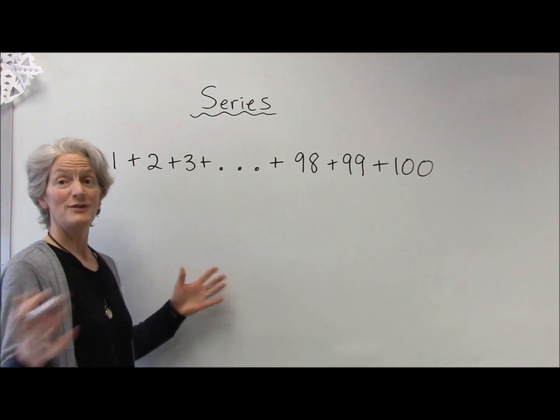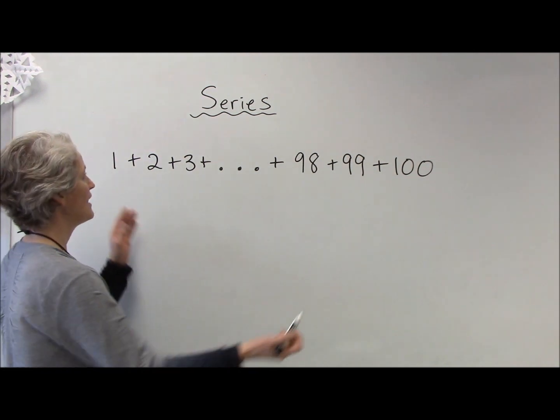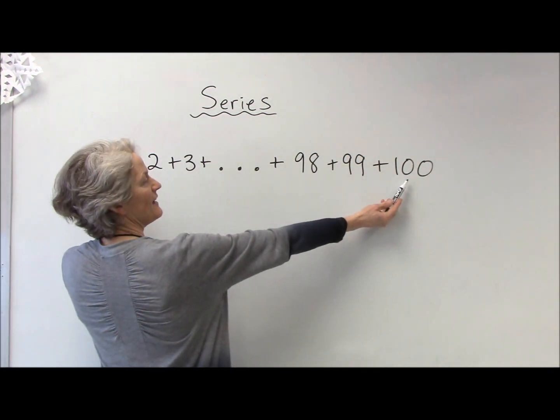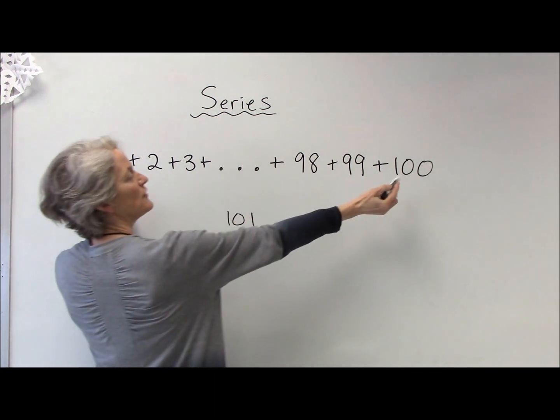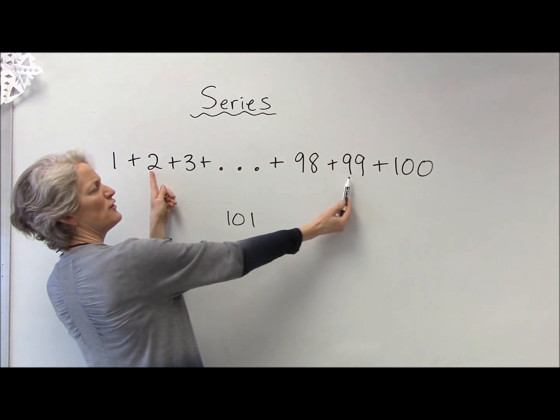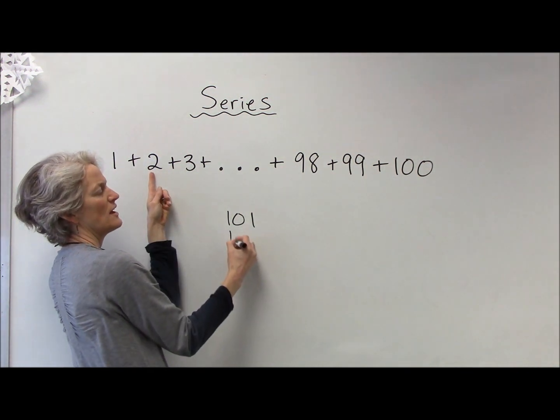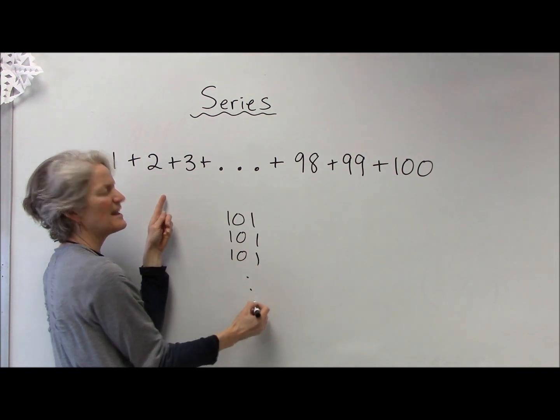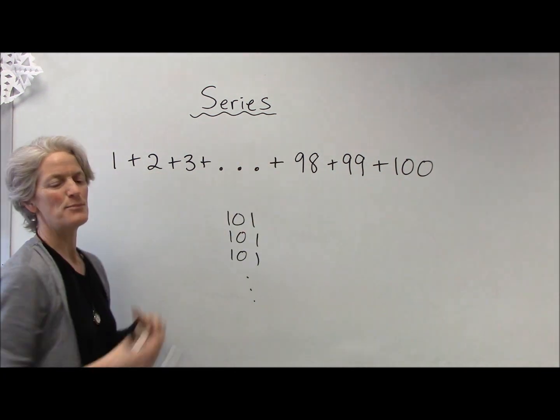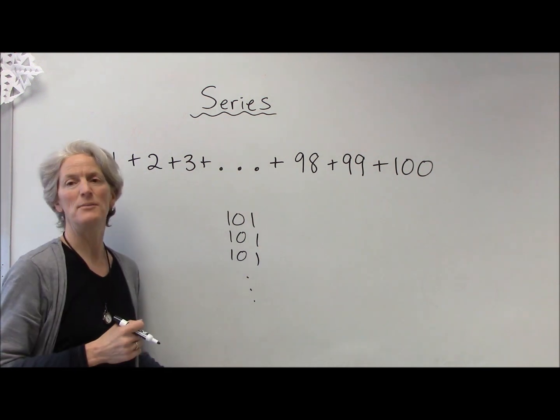So what he saw is, if I take the first and the last and add those up, that gives me a sum of 101. Then 2 plus 99 is another 101, and 3 plus 98 is another 101, etc. So he didn't have to add up all of those separately. He just had to add up how many 101's there were.